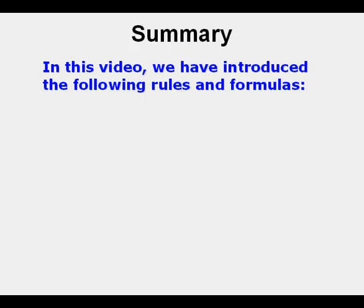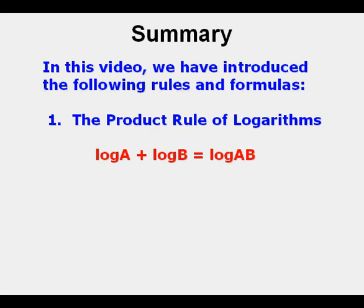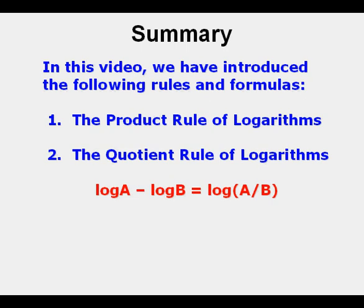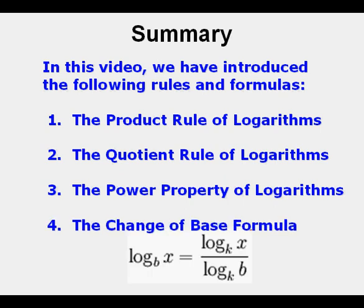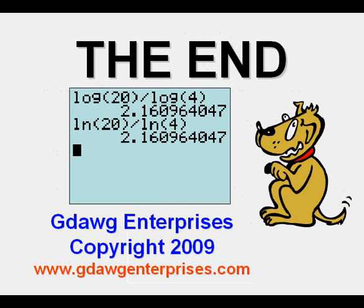In this video we introduced the following rules and formulas. The product rule of logarithms: log a plus log b equals the log of a times b. The quotient rule of logarithms: log a minus log b equals the log of a divided by b. The power property of logarithms: the log of a to the power of x equals x times the log of a. We also covered the change of base formula. We hope this summary of these special properties of logarithms has been helpful.